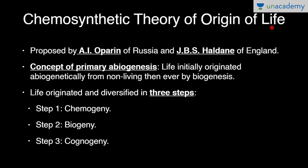The chemosynthetic theory of origin of life is proposed by A.I. Oparin of Russia and H.B.S. Haldane of England — Haldane later settled in India. This theory is also called chemical evolution or the modern theory of origin of life. It is based on the concept of primary abiogenesis — life initially originated from non-living things, but once life originated, it always originated from living things only. Life originated and diversified in three steps.